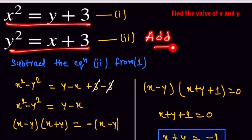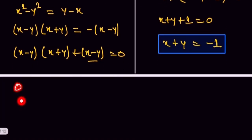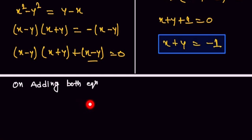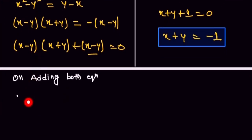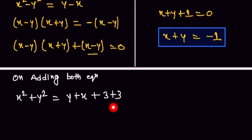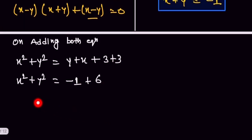Now we add both equations. On adding, x² plus y² equals x plus y plus 3 plus 3. So x² plus y² equals x plus y plus 6. We already found x plus y equals minus 1, so we substitute: x² plus y² equals minus 1 plus 6, which equals 5.